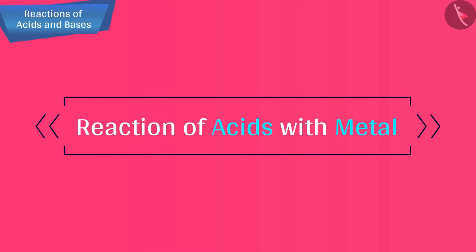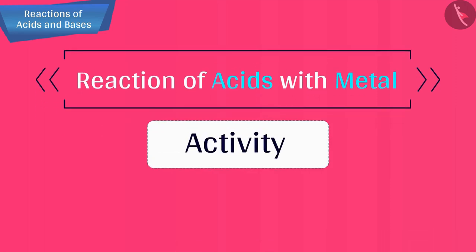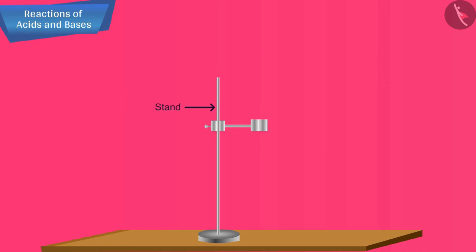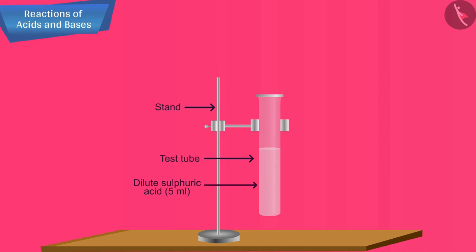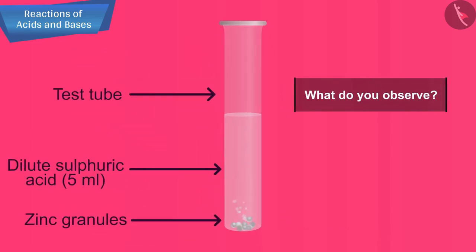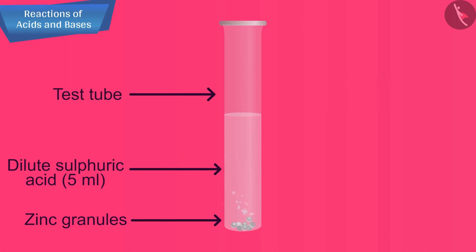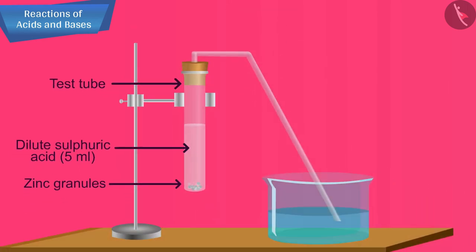Let us begin with the first reaction: the reaction of acids with metals. Set the apparatus as shown in the figure. Take about 5 ml of dilute sulfuric acid in a test tube and add a few pieces of zinc granules to it. You will observe the formation of gas bubbles on the surface of the zinc granules. Pass the gas being evolved through a soap solution taken in a trough by means of a glass tube.